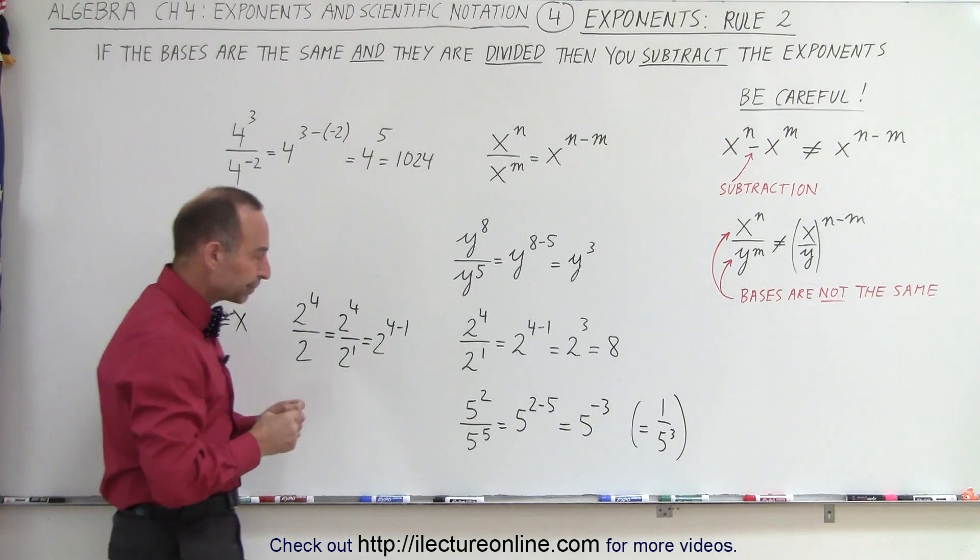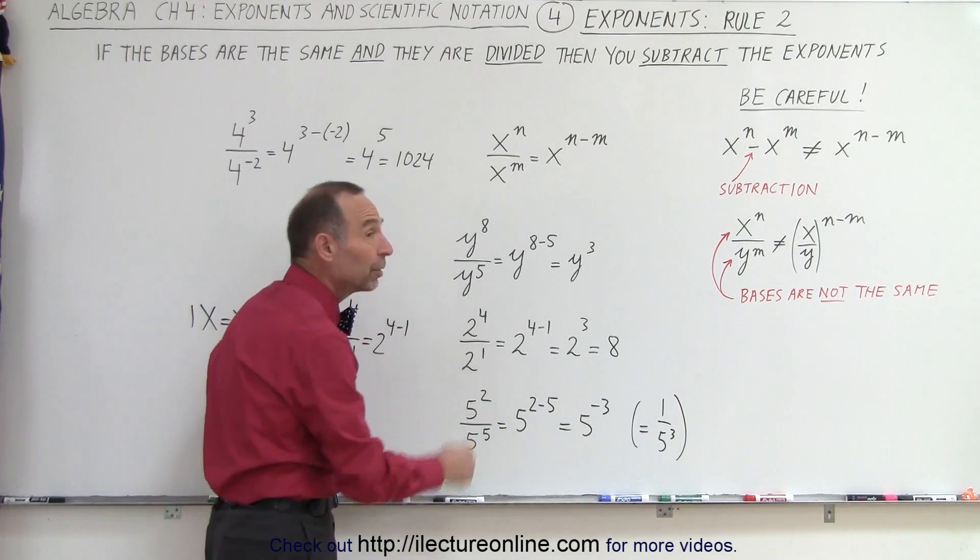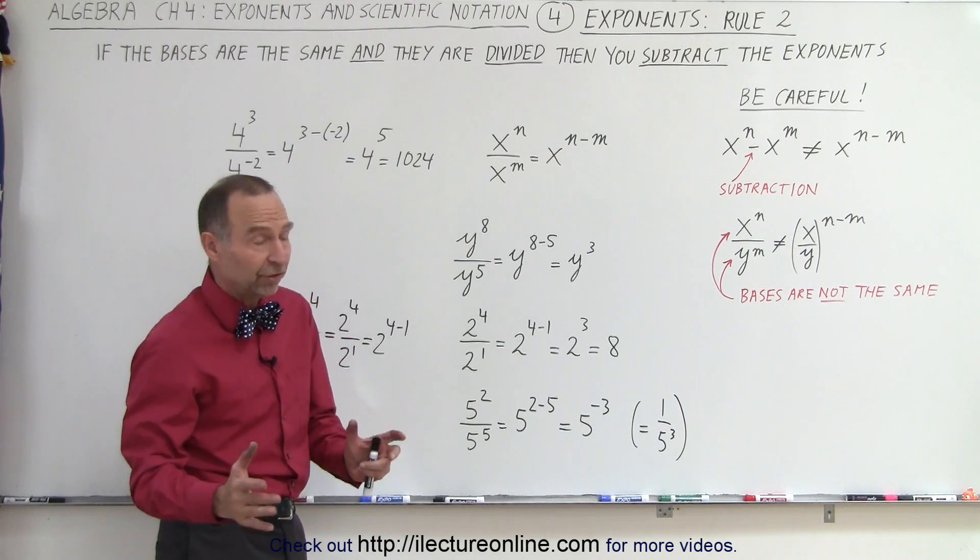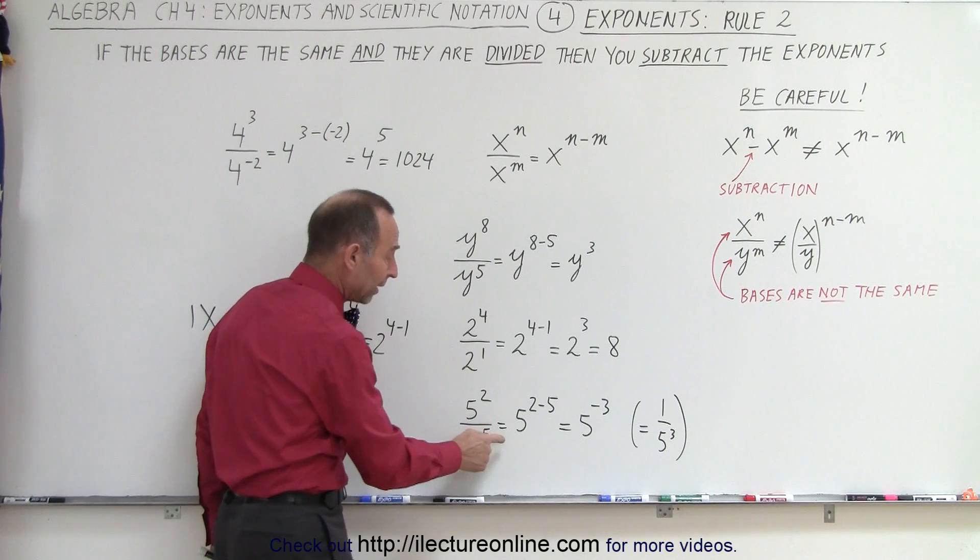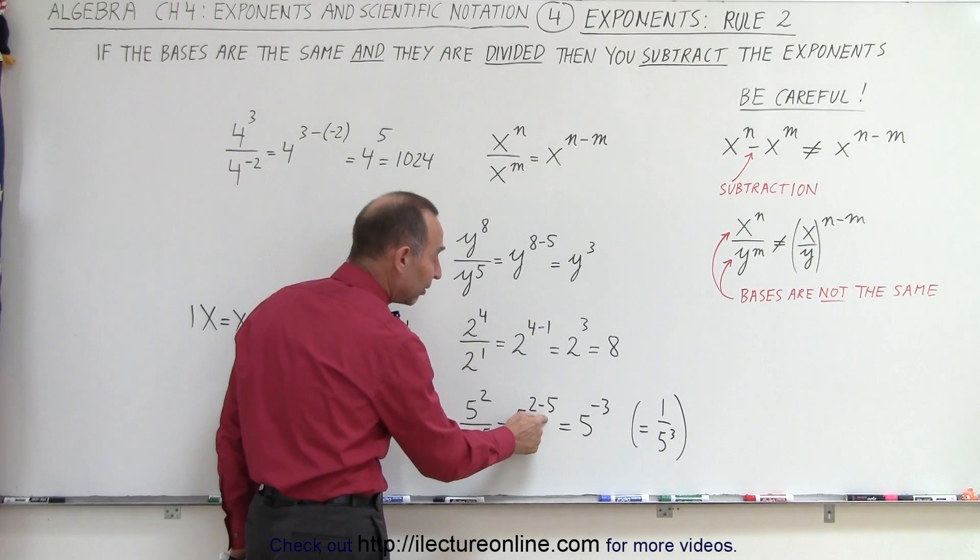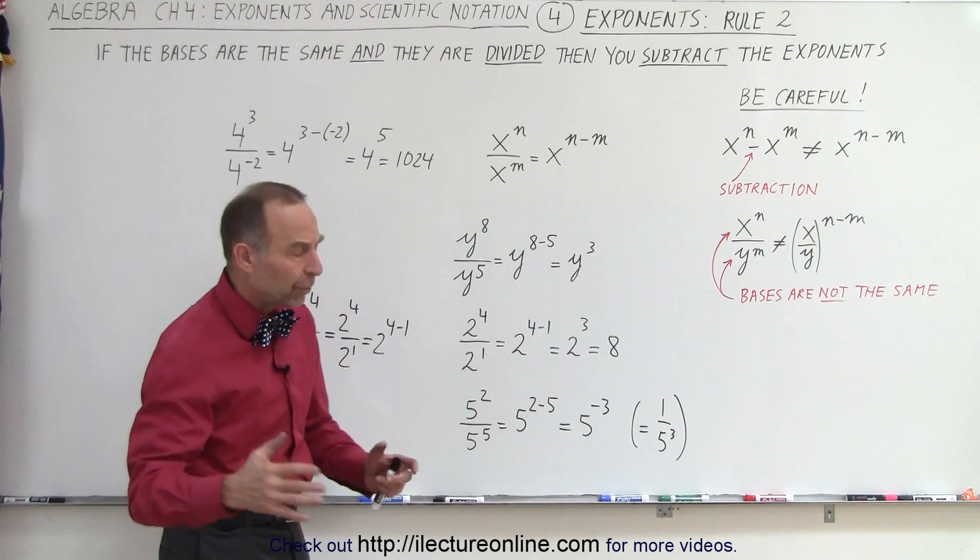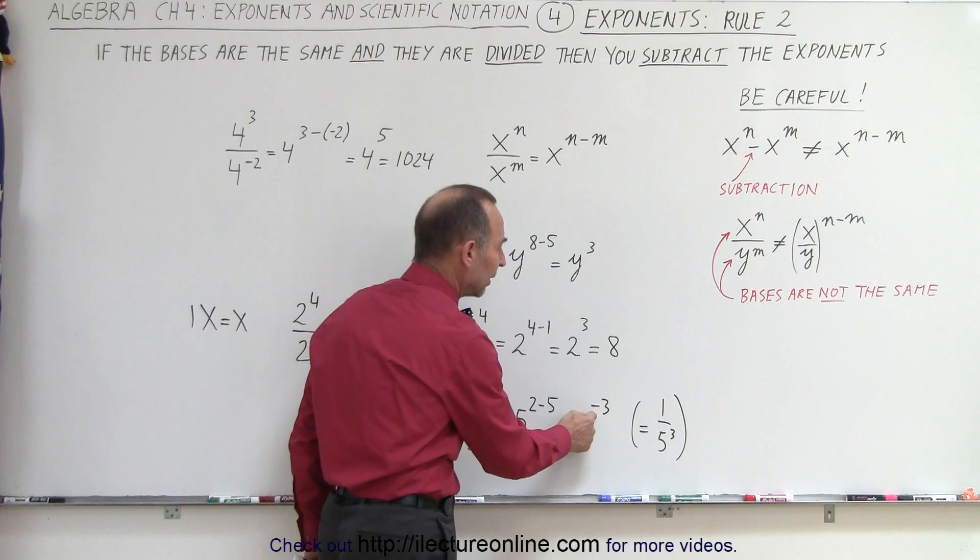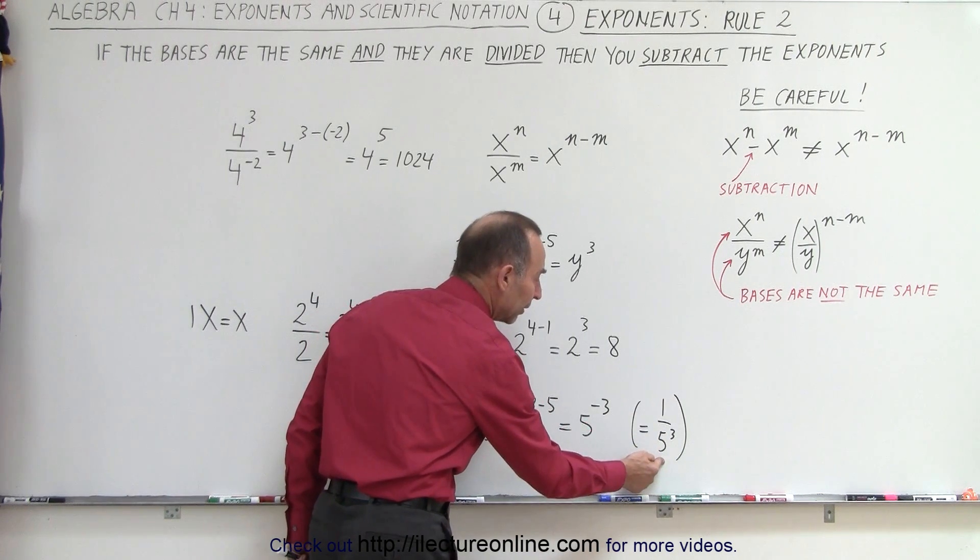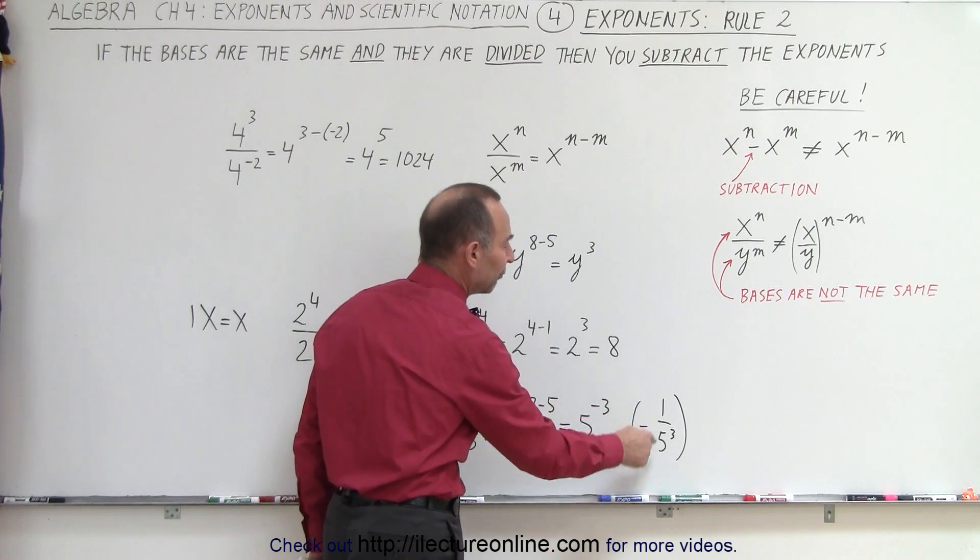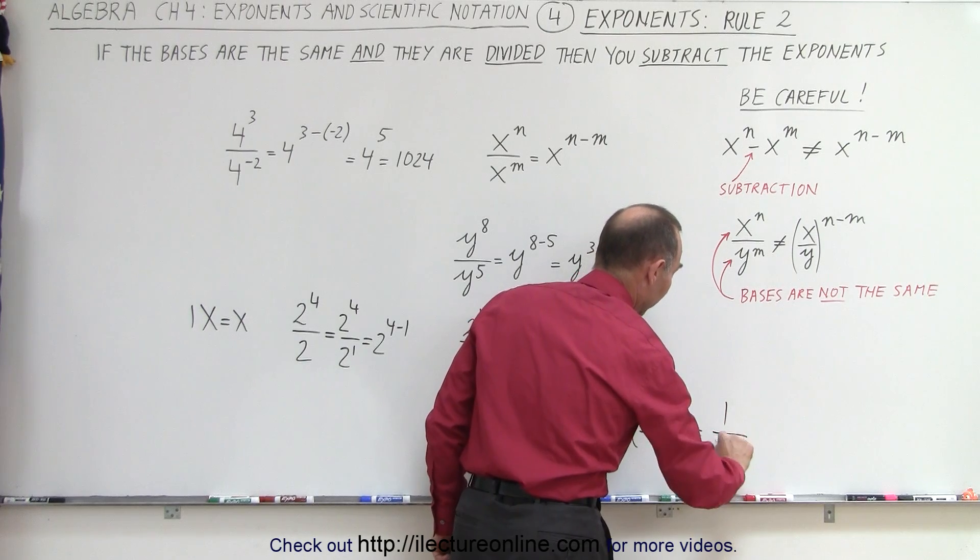And then finally, what happens when we have an exponent in the denominator which is bigger than the exponent in the numerator? Well, the rule is still the same. The bases are the same, you're dividing, so you write this is equal to 5 to the 2 minus 5, which means this is equal to 5 to the minus 3. And then if you remember in the summary, one of the rules said that if you have a negative exponent, that becomes a positive exponent when you take that number and write it in the denominator instead of the numerator. So this can be written as 1 over 5 cubed, which of course if you want to simplify that, that's 1 over 125.